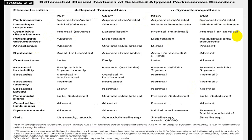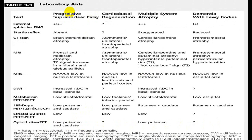Atypical Parkinsonism can have motor symptoms, oculomotor symptoms, cognitive symptoms, and autonomic symptoms. Any one of these favors atypical Parkinsonian disorders. The differential diagnosis includes PSP (progressive supranuclear palsy), CBD (corticobasal degeneration), MSA (multiple system atrophy), and DLB (dementia with Lewy body) — all grouped under Parkinsonism plus syndrome.